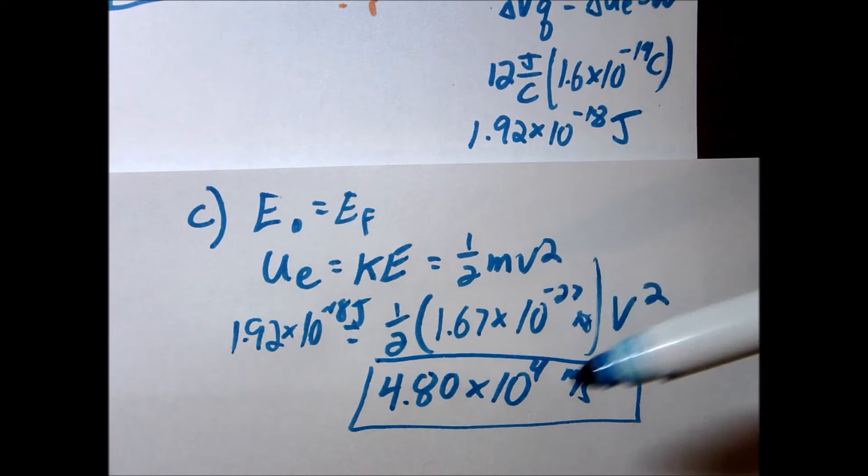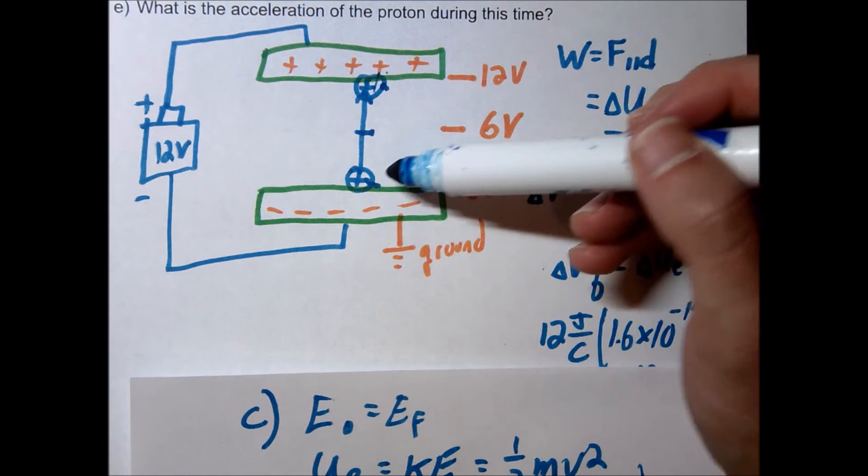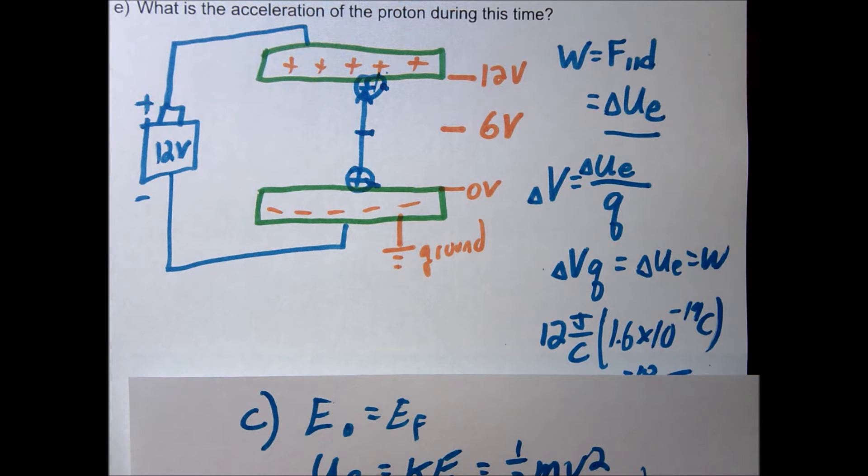4.8 times 10 to the fourth meters per second. And that's how fast it would be moving way down here, right at the bottom, right before it hits the bottom plate.